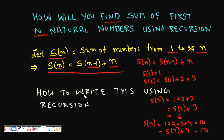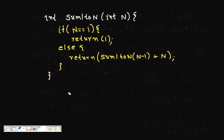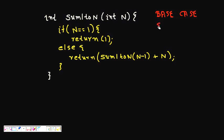Now how do we write this in code? Recursion has a base case — the most trivial case of the problem. S(1) is 1, so: if n equals 1, return 1. Otherwise, return the sum of first n minus 1 natural numbers plus n. That gives us S(n).